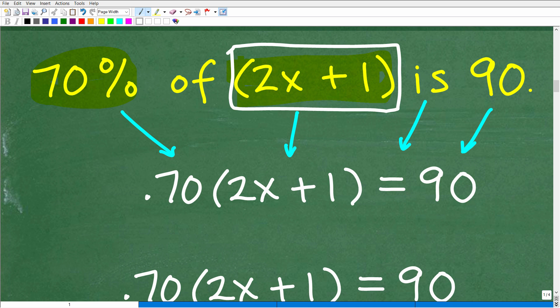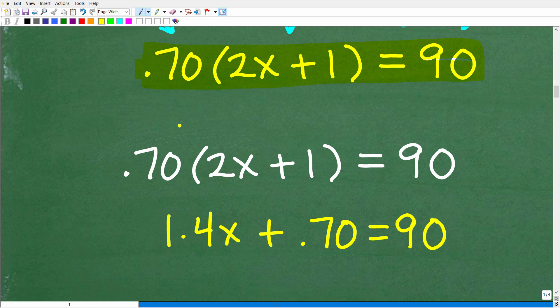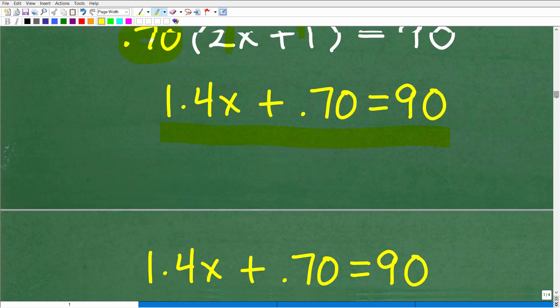All right. So that's basically how you want to set this problem up. Now, there's probably a couple different other ways you can do this problem. And if you took a different path, as long as you got this thing right, that's perfectly fine. But at this stage, what we have is a lovely algebraic equation. So now it's up to your algebra skills, if you have them, to solve this equation. Let's go ahead and do this right now. So the first thing we need to do is to use the distributive property. We're going to take that 0.70, multiply it by that 2 or 2x. We're going to get 1.4x and then 0.70 times that 1. We get 0.70 is equal to 90.